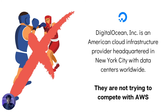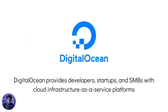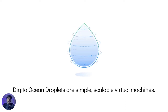Now let's have a look at DigitalOcean. DigitalOcean is an American cloud infrastructure provider, and they are not trying to compete with AWS. Instead, what they're doing is providing developers, startups, or SMBs — small to medium-scale businesses — with cloud infrastructure as a service platforms. Their target audience is very different from AWS, and how they function is primarily through droplets. DigitalOcean droplets are simple, scalable virtual machines, which are sort of similar to AWS EC2 instances.